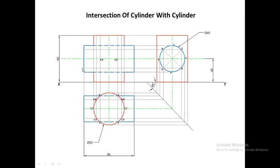From the side view, points 2 and 4 coincide in the front view, and points 8 and 6 also coincide. Mark point 2 and 4 where the vertical position line and horizontal position line intersect, on both left and right sides. Similarly mark points 8 and 6 where their horizontal position line cuts the corresponding vertical position lines.